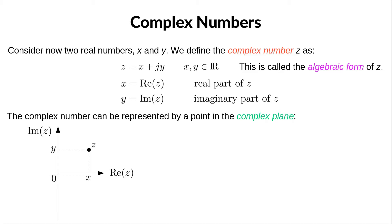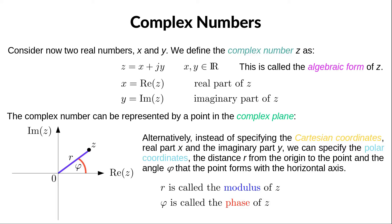Since a complex number is represented by two numbers x and y, it is natural to represent it graphically in a two-dimensional plane, which we call the complex plane. The real part goes on the horizontal axis and the imaginary part on the vertical axis, so x and y are just the Cartesian coordinates of the point z. Instead of Cartesian coordinates, we can also use polar coordinates: the distance to the origin is called the modulus, and the angle is called the phase.